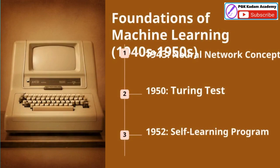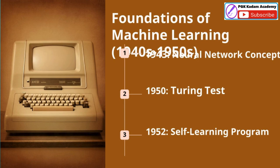The 1940s and 1950s laid the foundations for modern machine learning with key breakthroughs in neural networks, the concept of machine intelligence, and early self-learning programs. In 1943, Warren McCulloch and Walter Pitts published a pioneering paper on the concept of a neural network, which laid the groundwork for artificial neurons and computational learning theories. In 1950, Alan Turing introduced the idea of the Turing test, sparking the notion of machines learning and mimicking human behavior. In 1952, Arthur Samuel developed one of the first practical examples of machine learning: a self-learning checkers-playing program. These early advancements set the stage for the rapid progress in machine learning we see today.